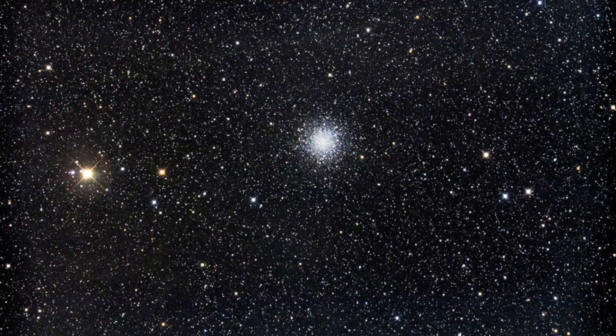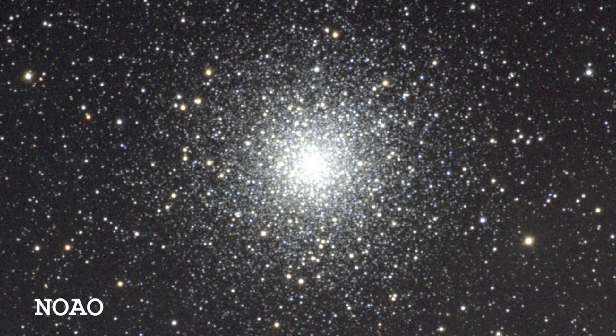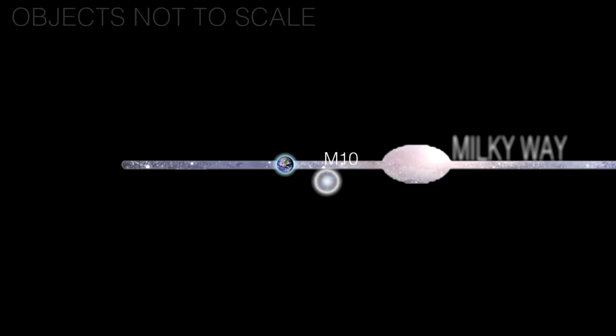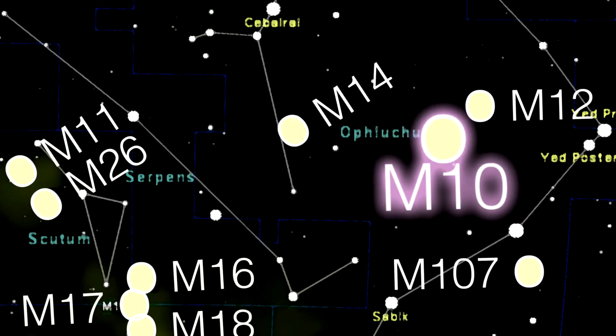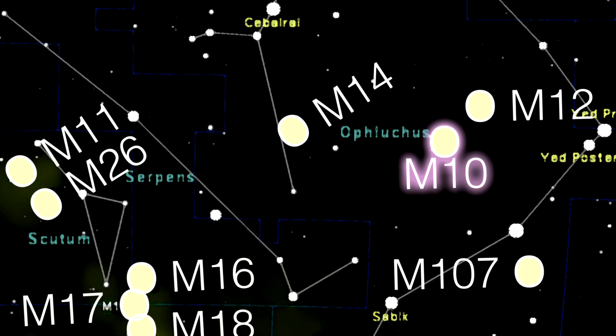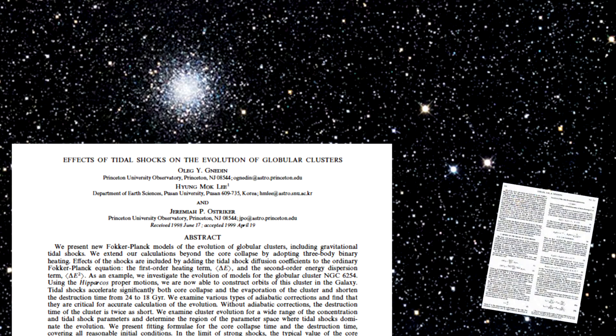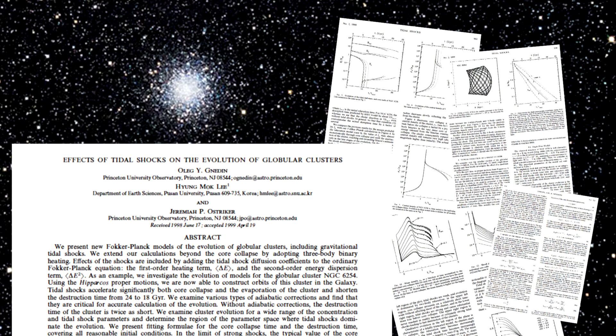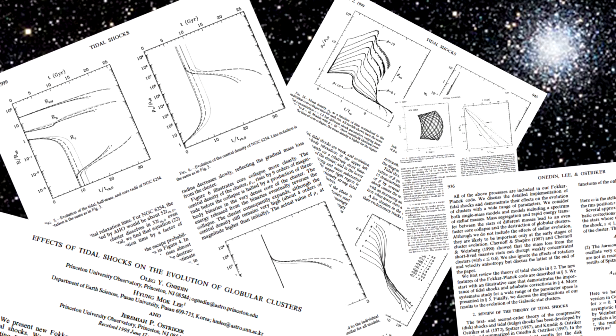Going back to M10 — this globular cluster orbits the galaxy in a slightly inclined orbit. It occasionally plunges down through the disk and passes up through the other side. It's not going to smash into anything — space is extraordinarily empty — but it does not come through unscathed. I found a paper called 'The Effect of Tidal Shocks on the Evolution of Globular Clusters,' which asks exactly that question: how dangerous is it for a globular cluster to pass repeatedly through the plane of the galaxy? It turns out it's pretty dangerous, but not through direct collisions — through tidal effects: the gravitational stripping of stars in the outskirts of the cluster as it passes through the disk.